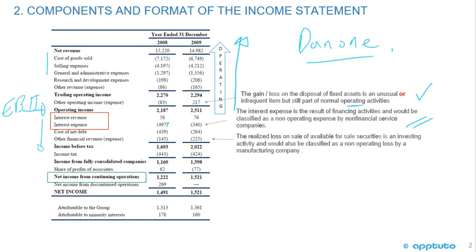An example of other revenue or expense would be the realized loss on sale of available-for-sale securities. It's an investing activity and would be classified as a non-operating loss by a manufacturing company. We then have earnings before tax (EBT), income before tax, income from tax, income from fully consolidated companies, and share of profits of associates, which gives us our net income from continuing operations.